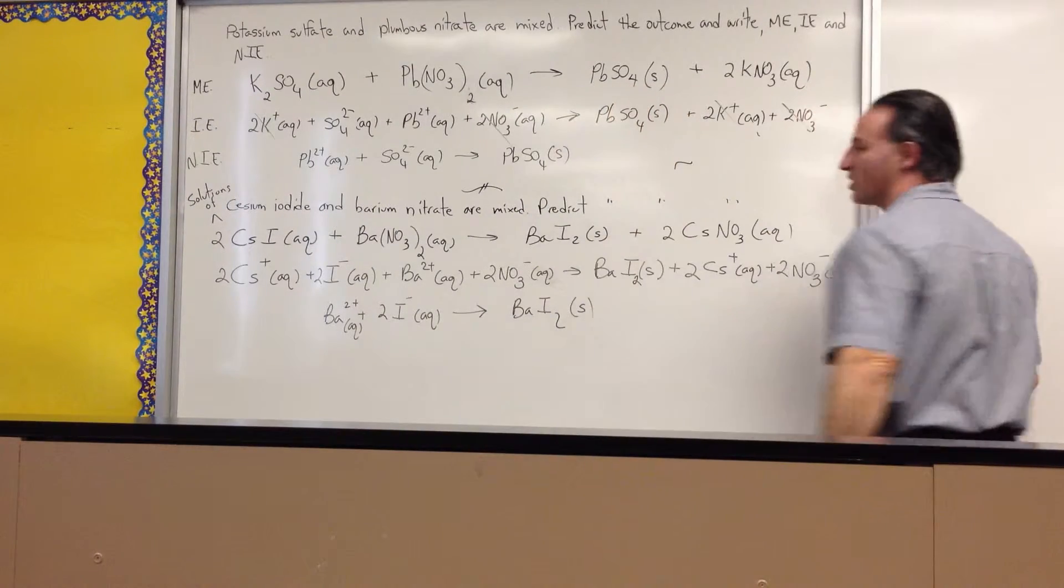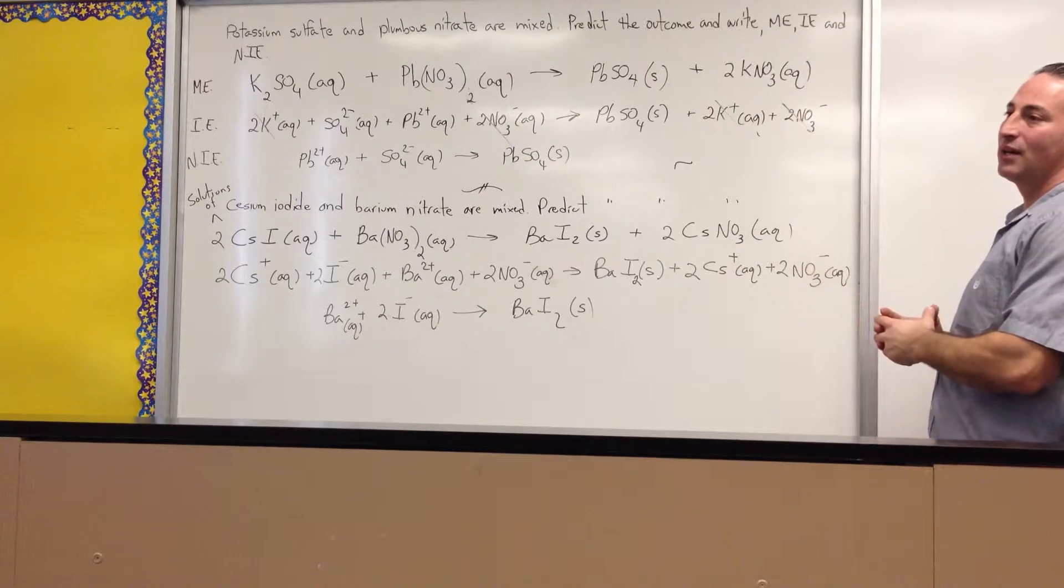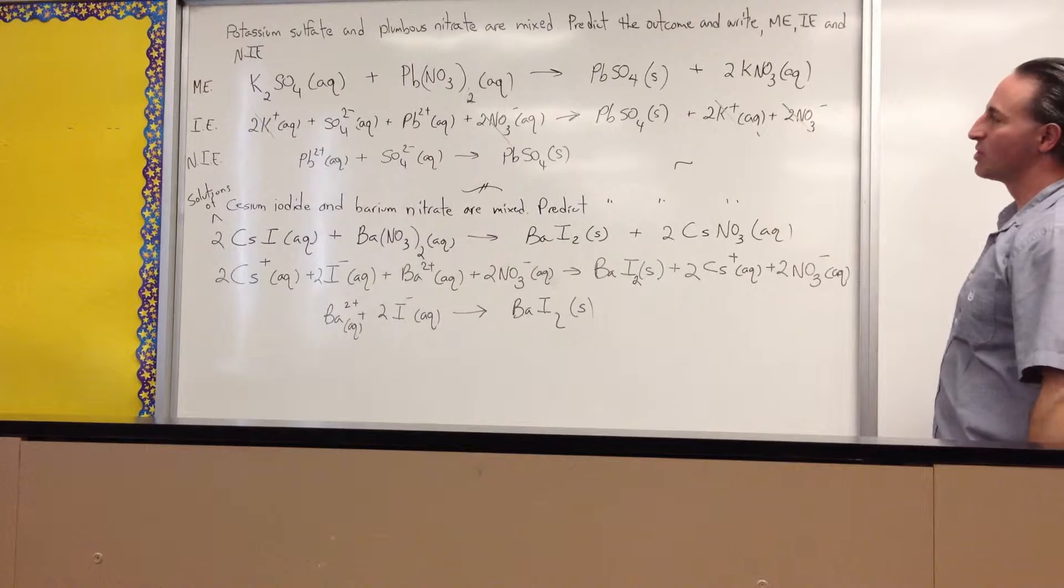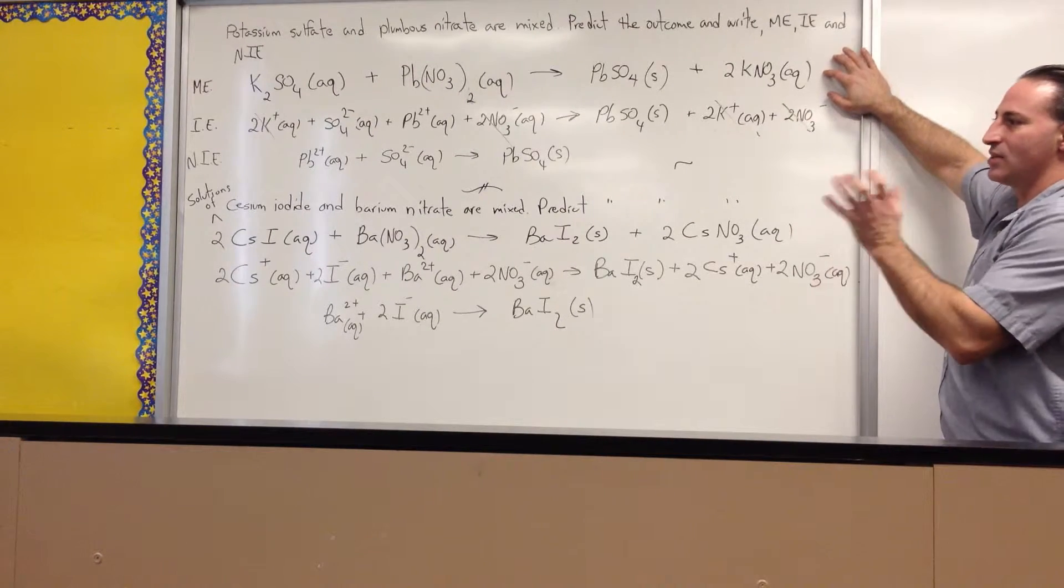Lead sulfate, if you look up the solubility tables, is not a soluble substance. Therefore, the ions will combine in an aqueous solution and they'll form a precipitate. This is the molecular equation, so you show everything as one piece.